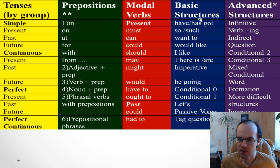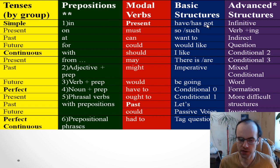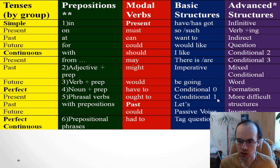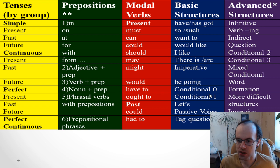Of course tenses, prepositions, and modal verbs aren't enough alone for a strong intermediate or advanced level. You also need basic structures: 'have got' versus 'have' (mostly heard in British English), the difference between 'such' and 'so,' 'want to' versus 'would like,' 'there is/there are,' imperatives, and 'be going to' instead of future simple.